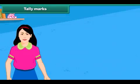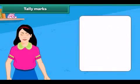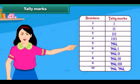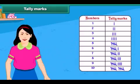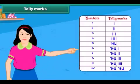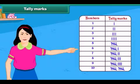Tally marks are one of the easiest and quickest methods used for data handling. A tally mark is counting the objects or activity in groups of 5. A single vertical line represents a single object.